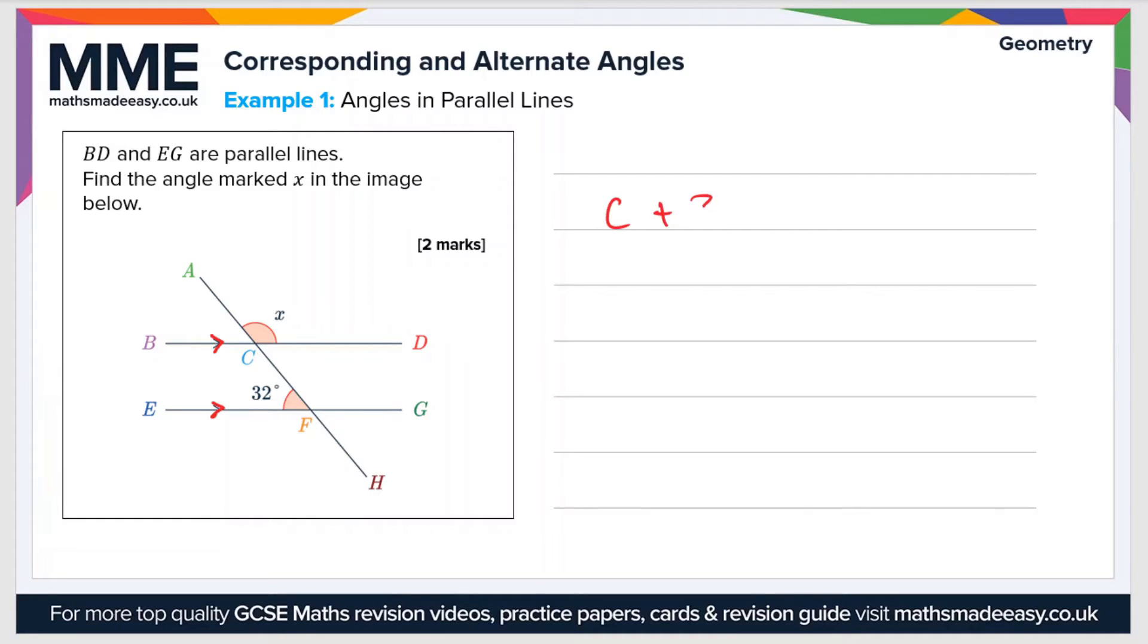So we can say that C plus 32 equals 180 degrees. So C equals 180 minus 32 which equals 148 degrees. So C equals 148 degrees.